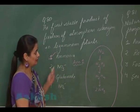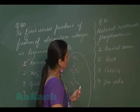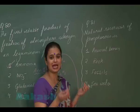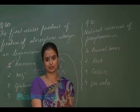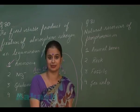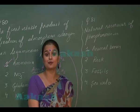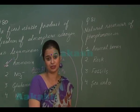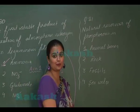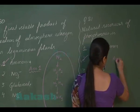In question number 81, we have to find the natural reservoir of phosphorus. Phosphorus is an element which shows sedimentary cycling. In the case of sedimentary cycles, the reservoir is the lithosphere — you can say the reservoir is rock. So for this question the right answer is option 2.